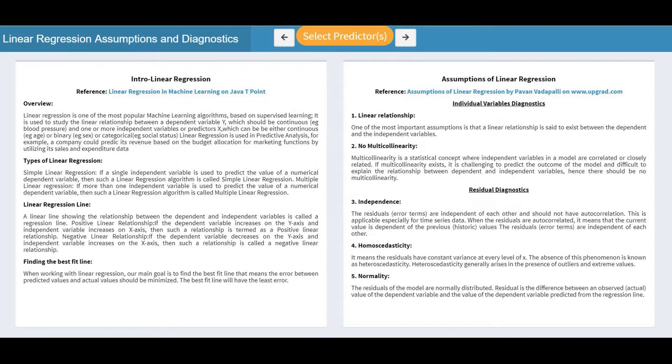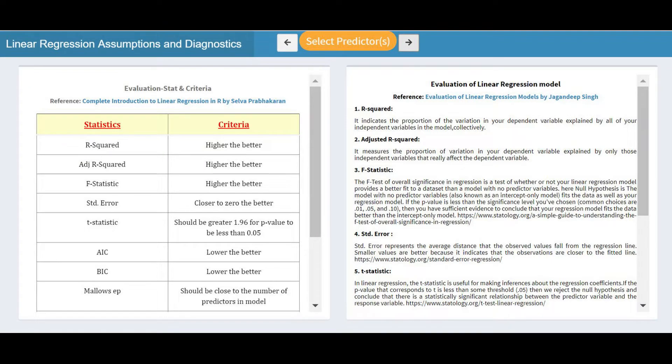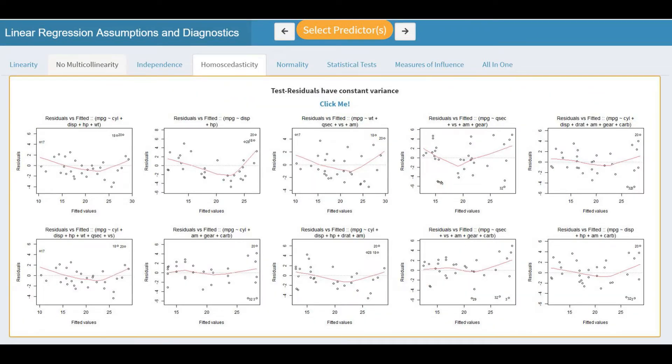This Shiny app is part one on linear regression with R. Here we cover a brief introduction of linear regression, a list of five main assumptions of linear regression, model evaluation criteria, and plots and statistical tests to validate compliance to those assumptions.